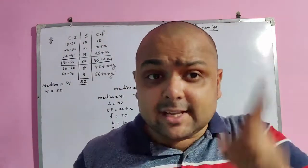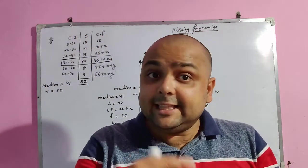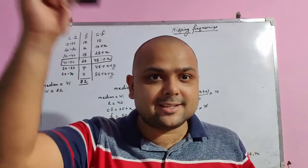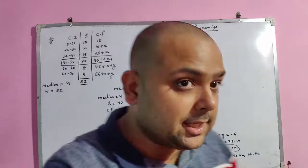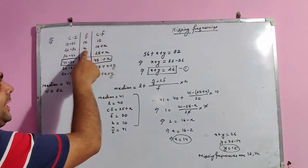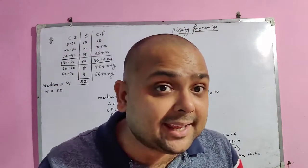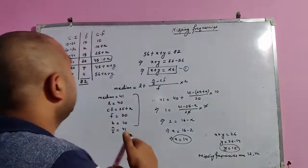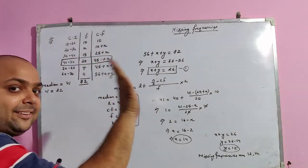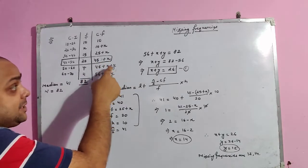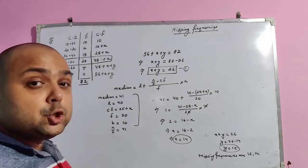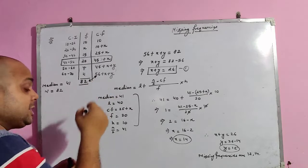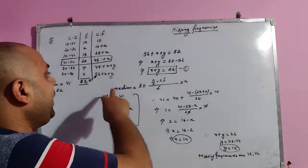When a median problem is given, the first step is to calculate cumulative frequency. The cumulative frequencies are: 10; 10+x; 25+x; 45+x; 45+x+y; 56+x+y. Note that 10 is added to x, not multiplied. The total must equal 82, so: 56 + x + y = 82, giving x + y = 26. This is our first equation.